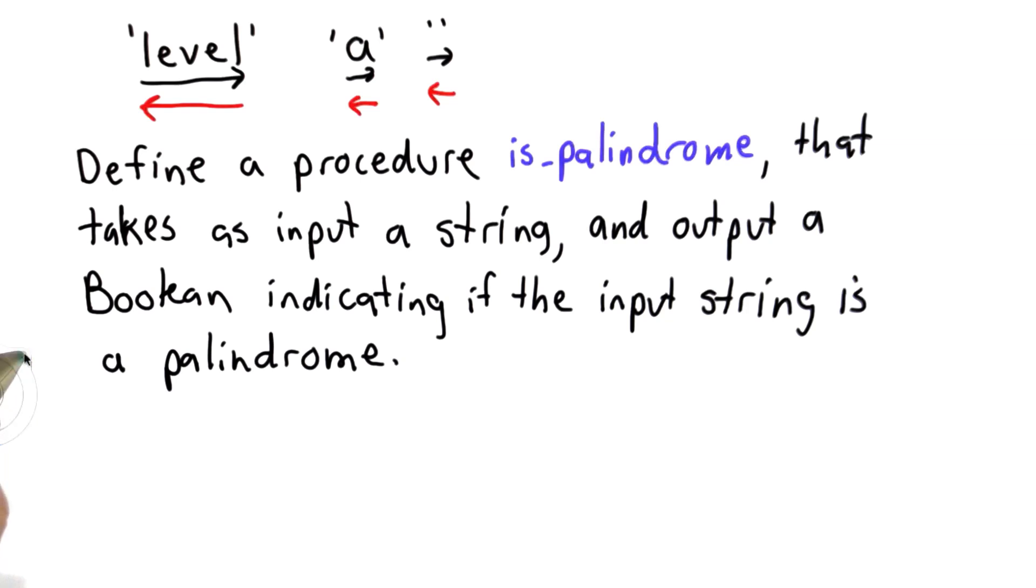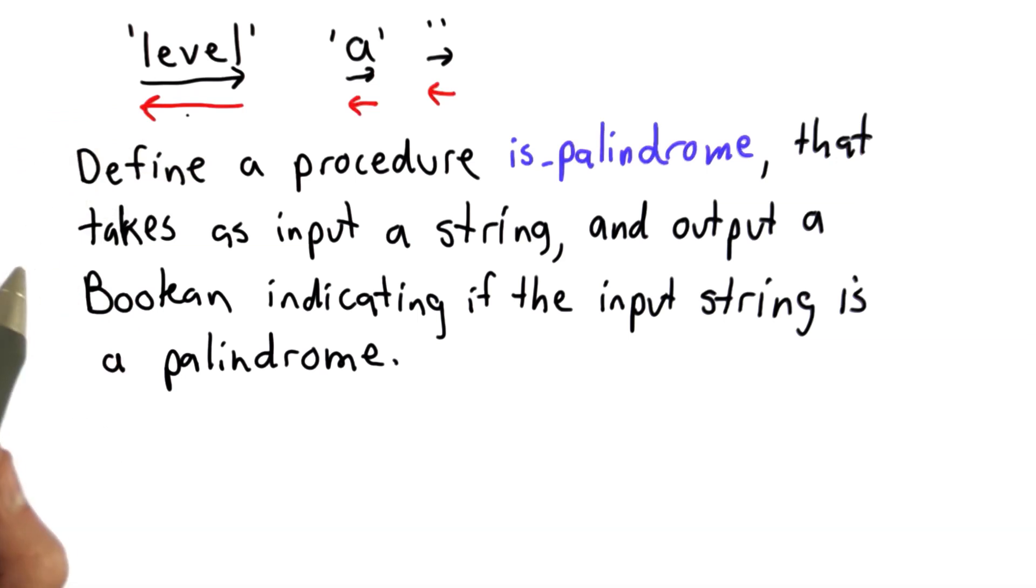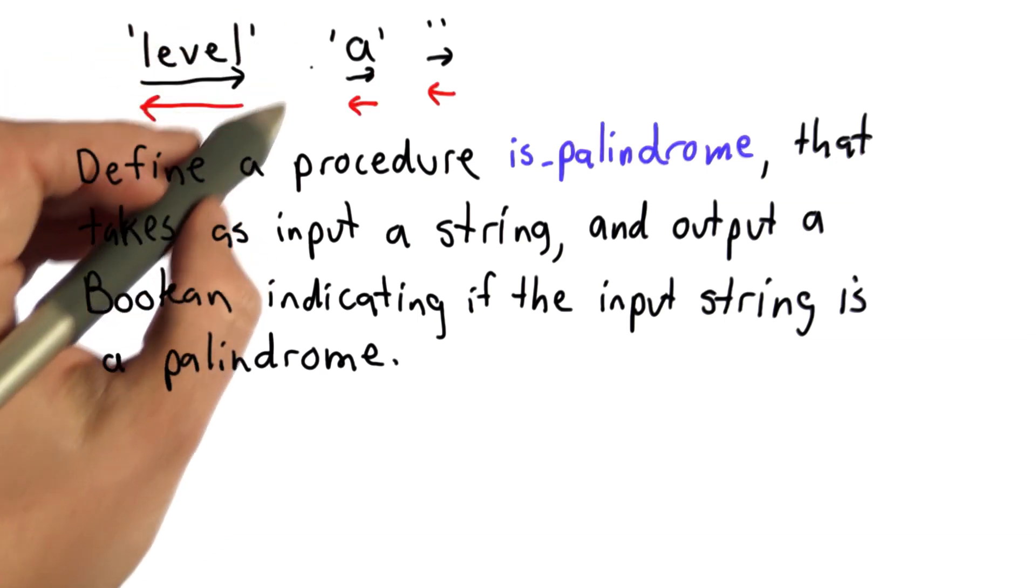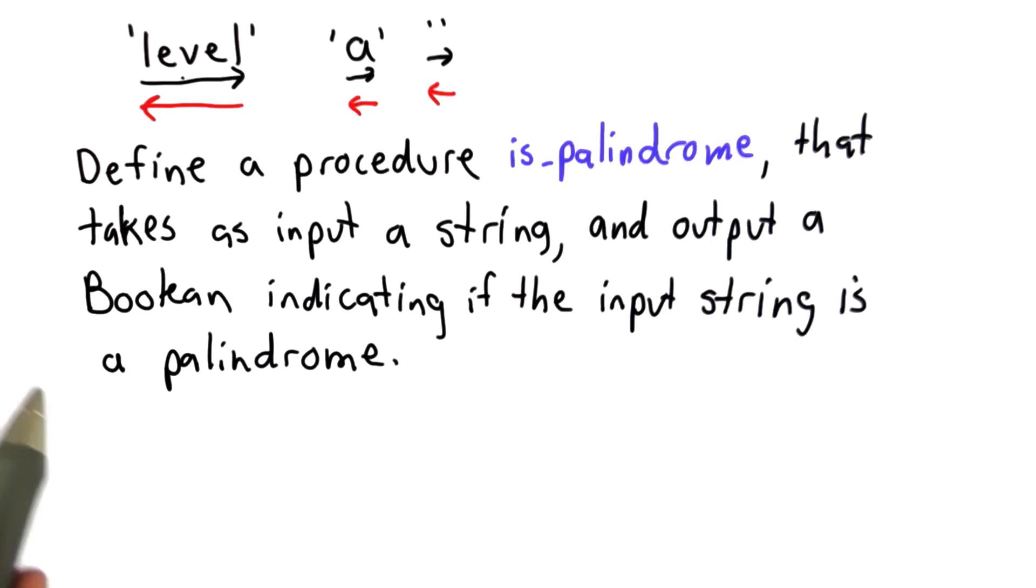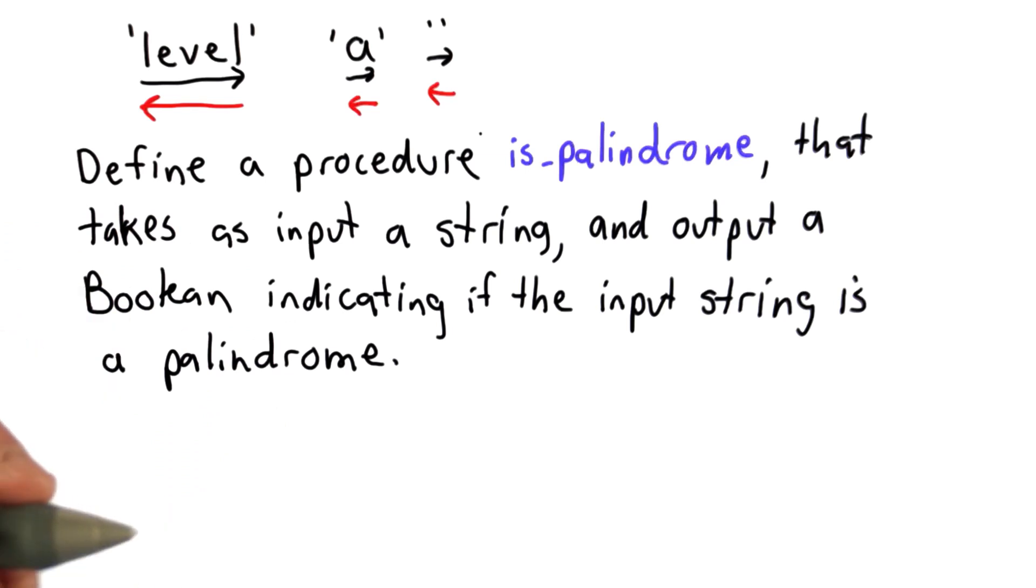So the first hint is we want to think of what it means to be a palindrome to try to formalize that definition. If we knew easy ways to produce the reverse of the string and check if it's equal, well that would be an easy way to solve this, and in fact there are ways to do that in Python, but we haven't seen them yet, and I want to have you think about ways to do is_palindrome that don't depend on that.